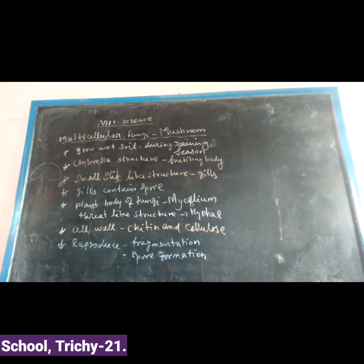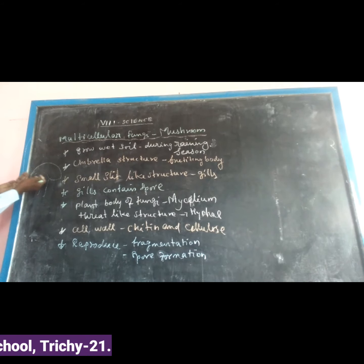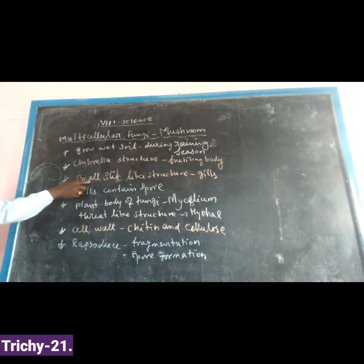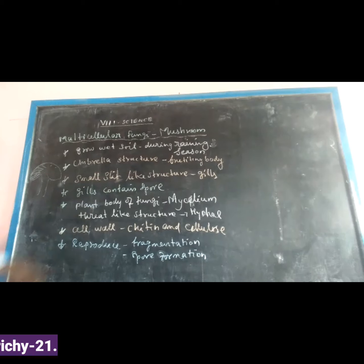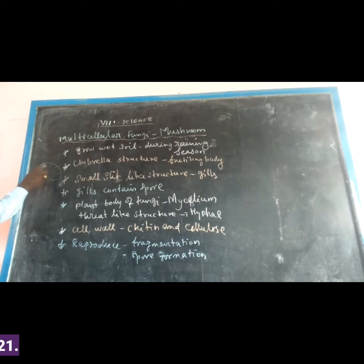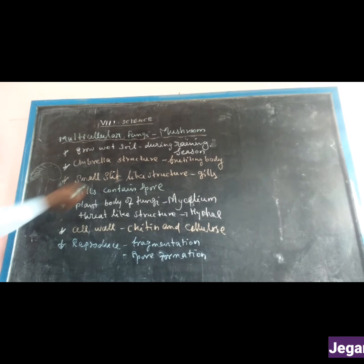The lower part of the fruiting body consists of small plate-like structures called gills. These gills contain spore-producing structures and develop the spores.